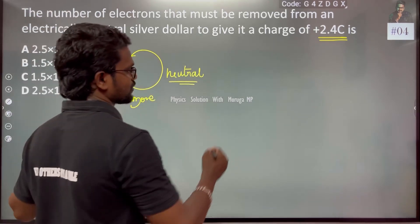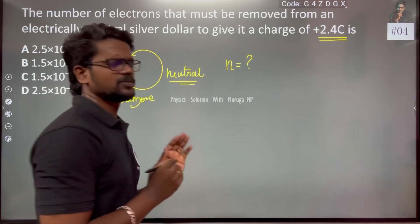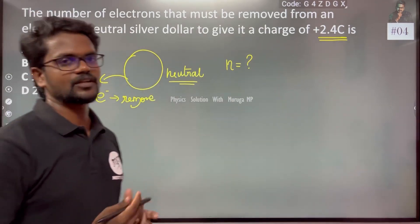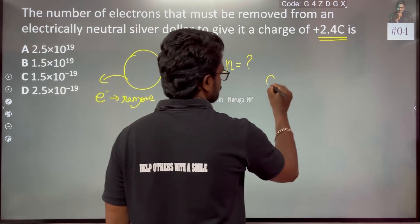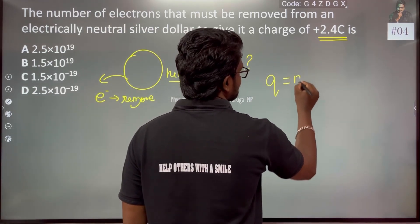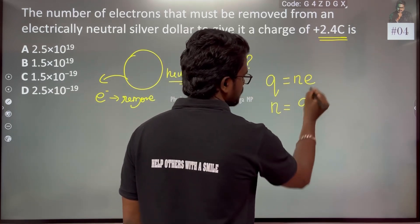The number of electrons comes from quantization of charges. q equal to n times e. n that we give - q divided by e in the division.